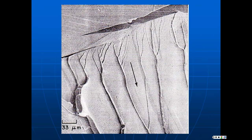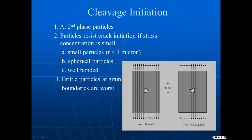Here's a picture of a cleavage fracture — you can see the river patterns. Cleavage starts at second phase particles. Particles are good at resisting initiation if they don't affect the global stresses much, which happens if they're small, spherical, and well bonded. Well-bonded means stress can transfer through the particle; if it isn't well bonded, stress has to go around it, acting like a hole and elevating stresses around the particle, making dislocation pileup easy. The worst scenario is brittle particles at grain boundaries, which is unfortunately where nature likes to put second phase particles. If you want small, spherical, well-bonded particles, you have to pay attention during processing — this is often the difference between a high-quality and low-quality material, even if their composition and impurity content are the same.